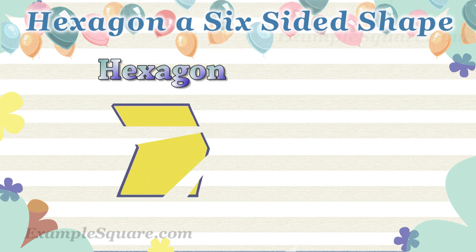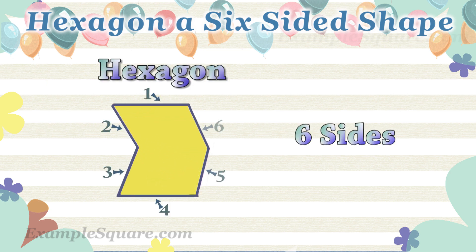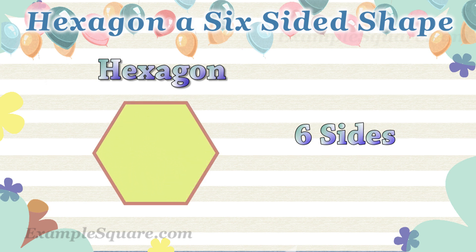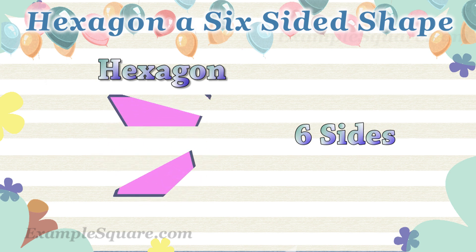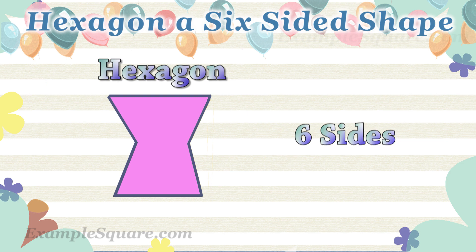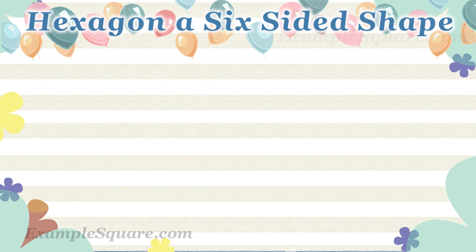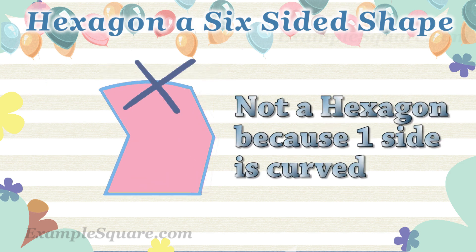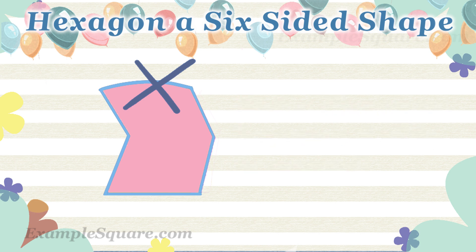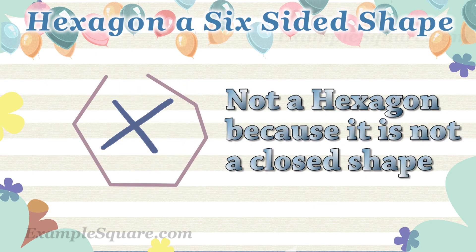These are some examples of hexagons. All six sides of a hexagon are straight sides; the sides cannot be curved and the shape should be closed. It is not a hexagon because one of the sides is curved. It is not a hexagon because it is not a closed shape.